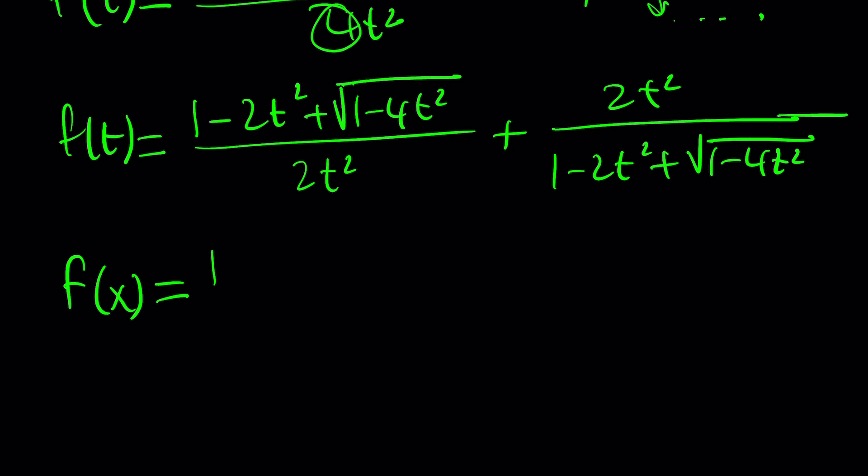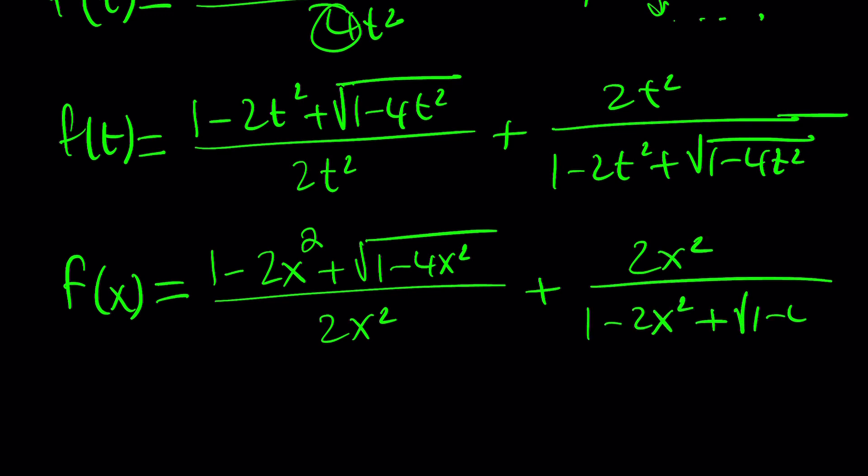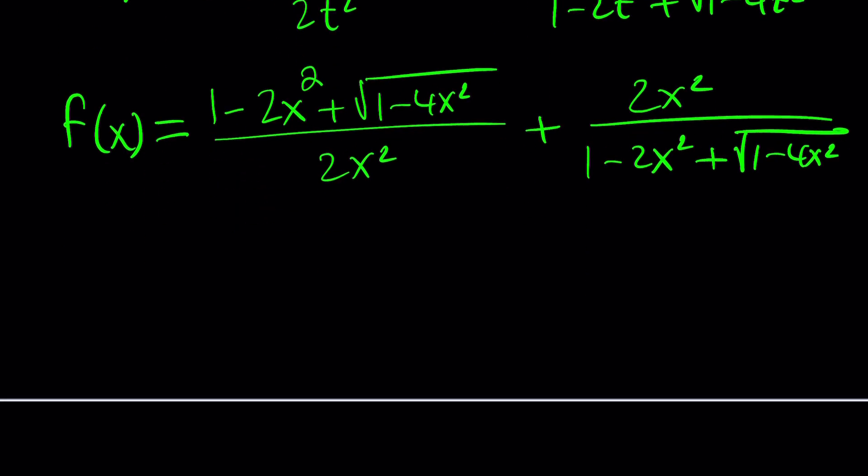But if I replace t with x, again, this is not the same x. You've got to remember that. I'm going to be getting something like this. Just replace all the t's with x's and it should give you something like this, with square root of 1 minus 4x squared. Now, this is the first method, and again, this can be simplified more, but let's go ahead and quickly talk about the second method. And trust me, it's going to be faster.